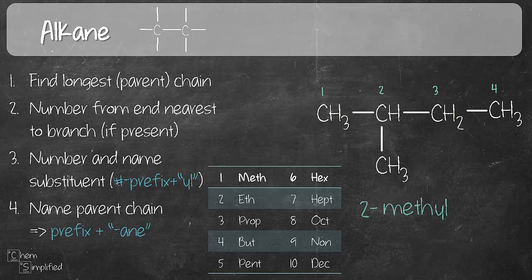And then moving on, the last step, we need to name the parent chain. So the parent chain, we have already counted, there are four. So then we end it with A and E because this is an alkane. So as a whole, the name for this compound is 2-methylbutane.